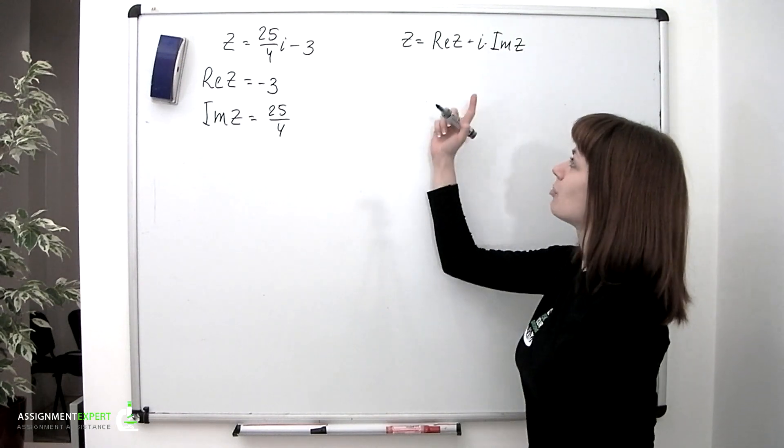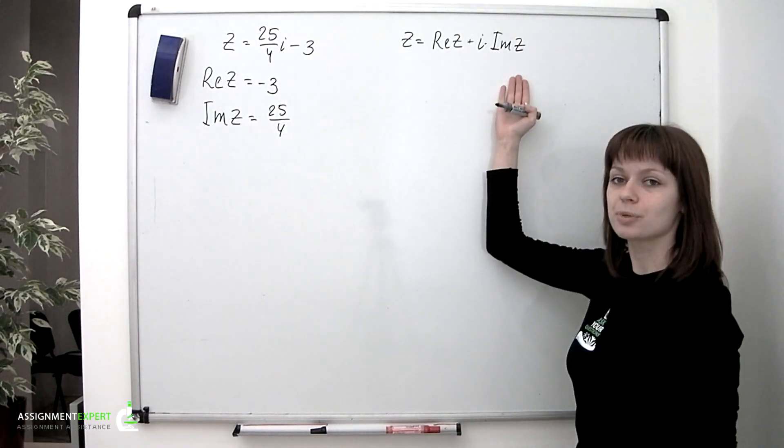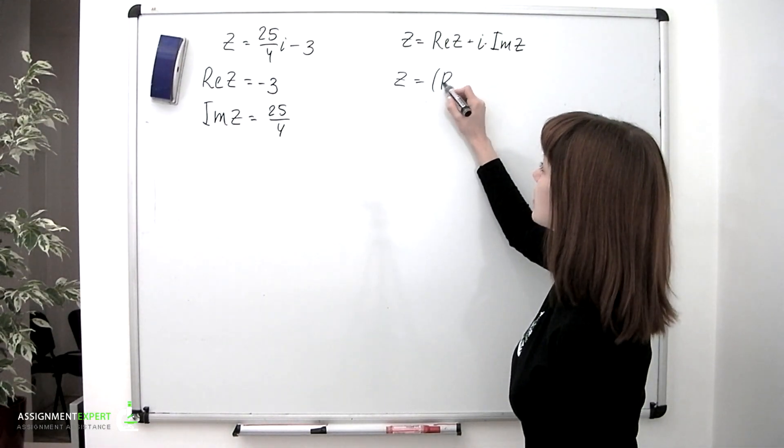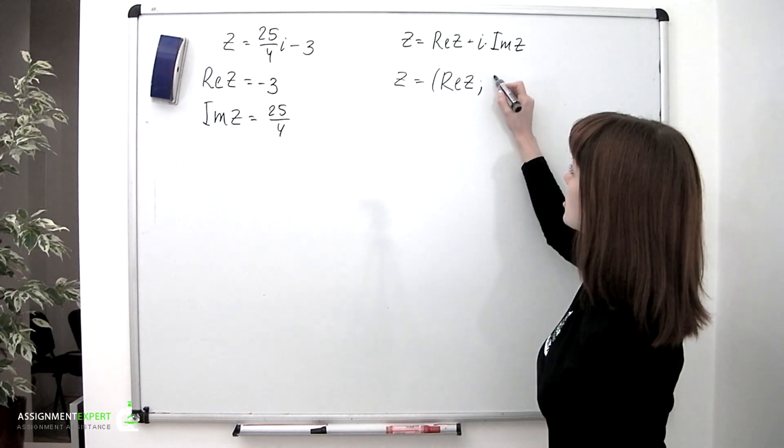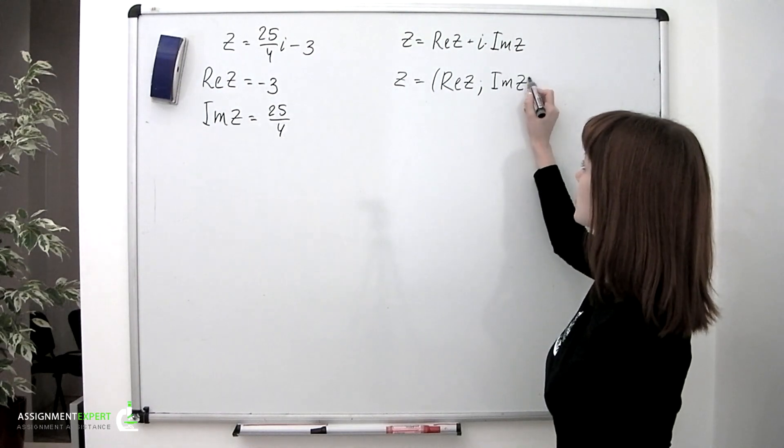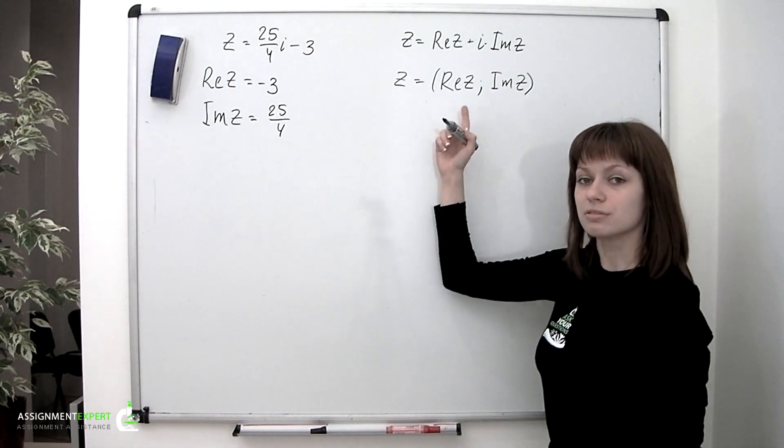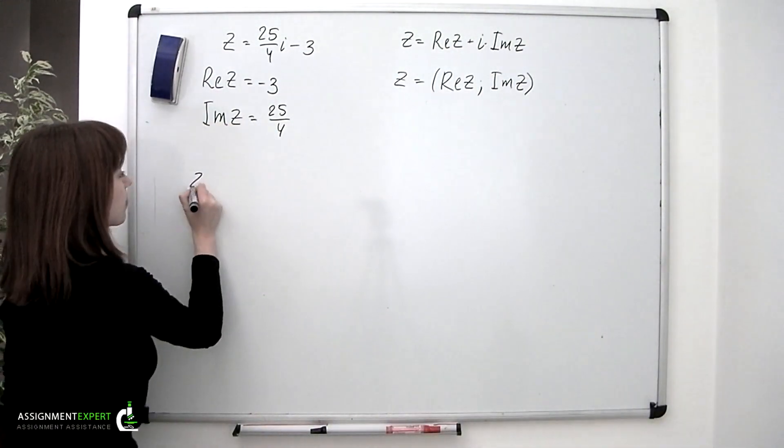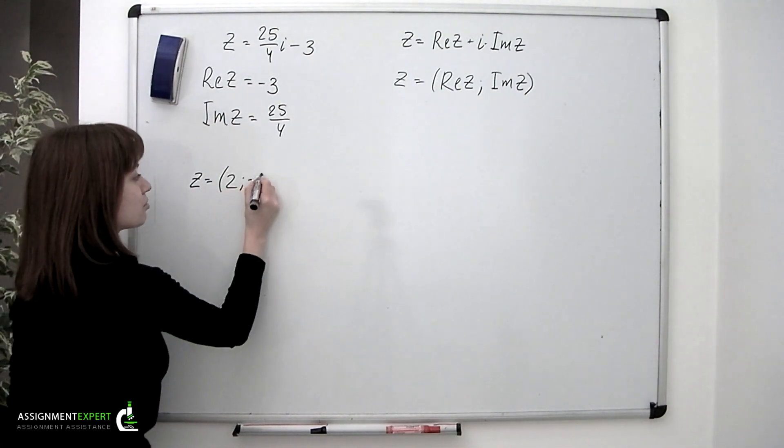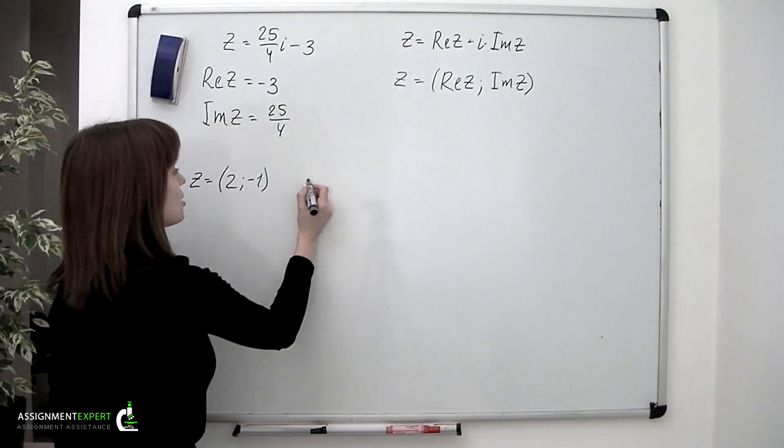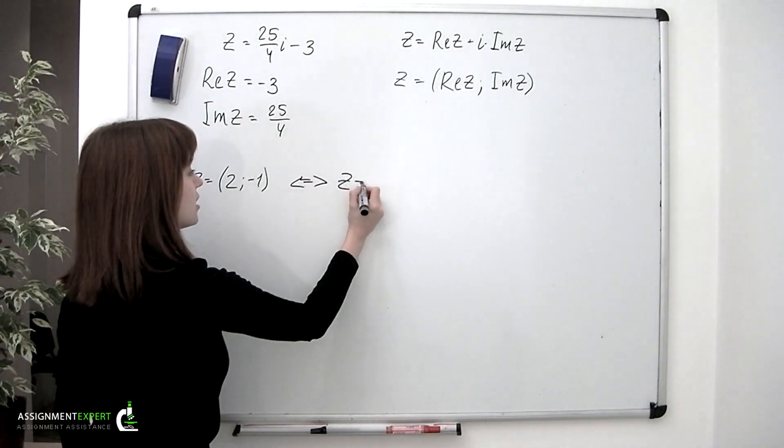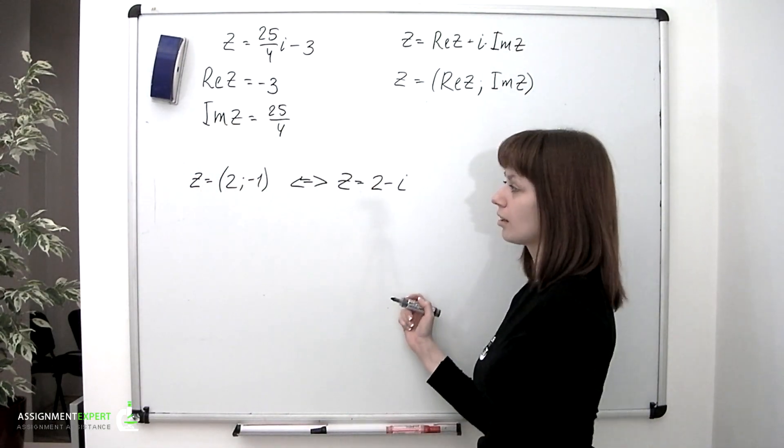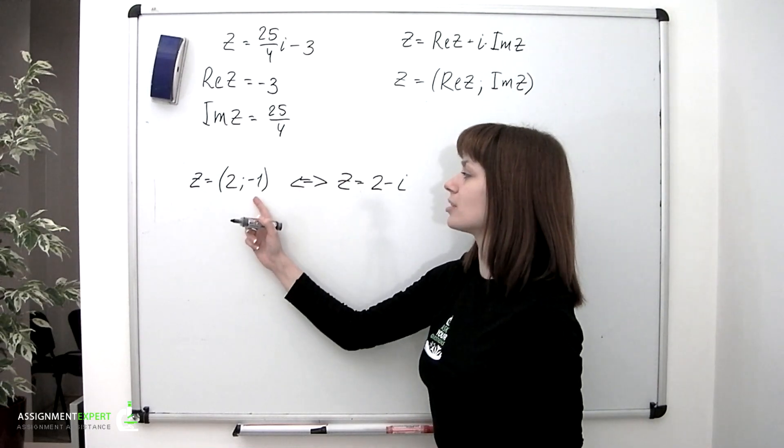Now, we emphasized a lot that a complex number contains a real part and an imaginary part. Therefore, it is convenient to represent complex numbers as pairs, like this: (Re(z), Im(z)). So the first number in the pair stands for the real part, and the second stands for imaginary. So if we have z = (2, -1), it is just another way of notation for z = 2 - i.